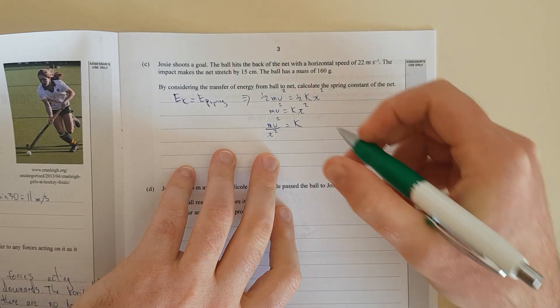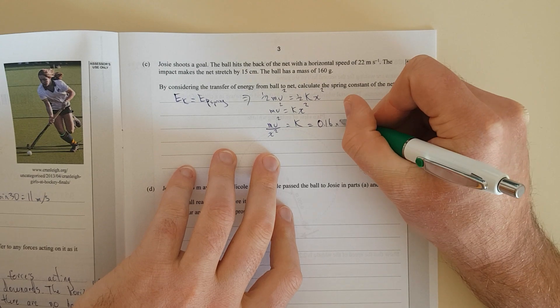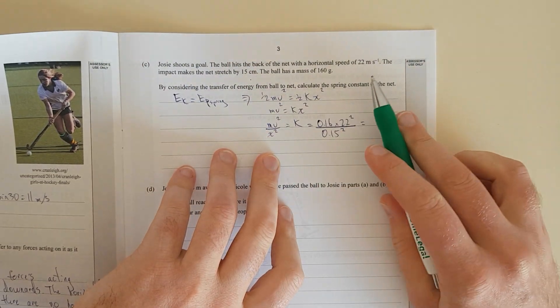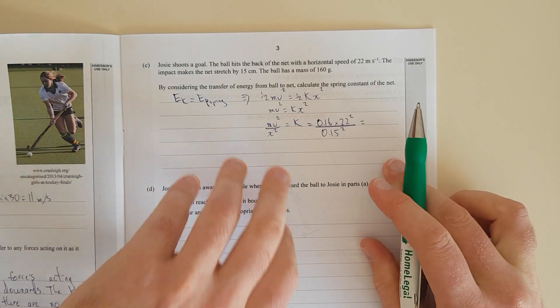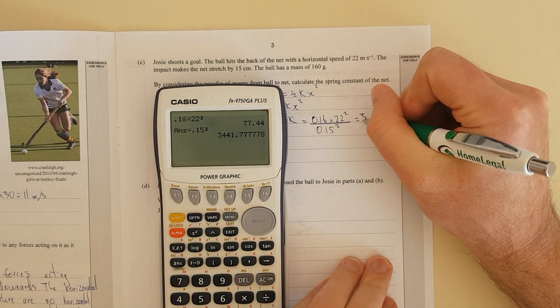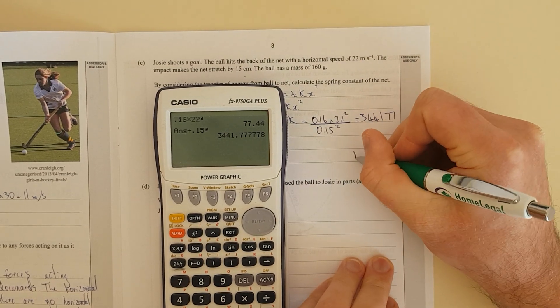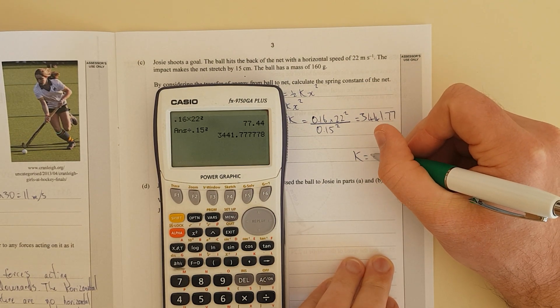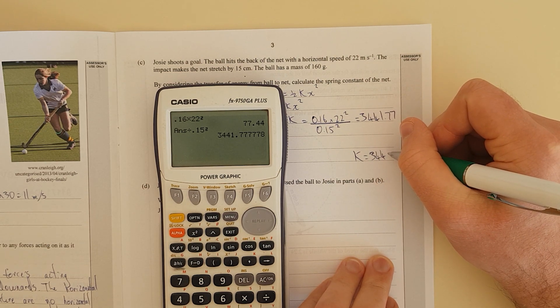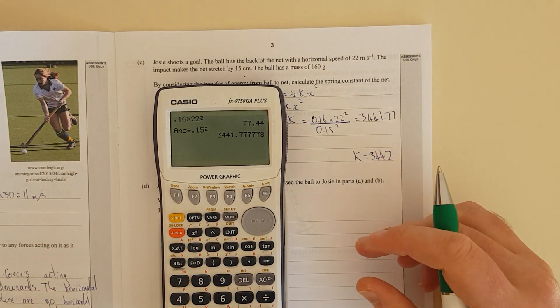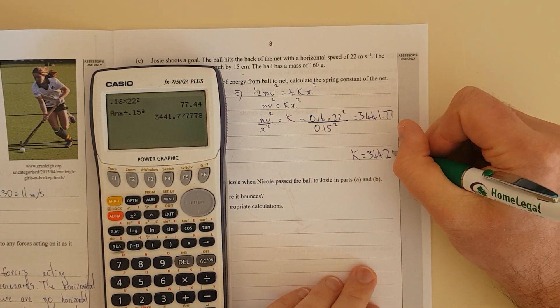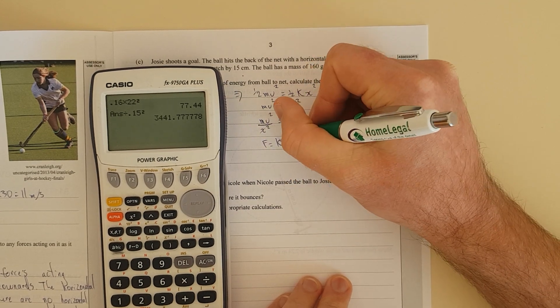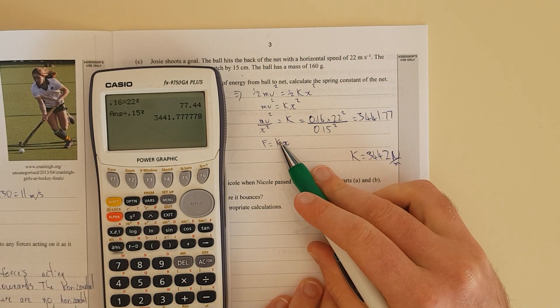That is going to equal 0.16 kilograms times 22 squared divided by 0.15 squared, because it's 15 centimeters, everything needs to be SI units. That gives me 3441.77, so k equals 3441.77 newtons per meter. That's the spring constant, newtons per meter, because in your formula sheet you have f equals kx, and force divided by distance gives you the spring constant units.